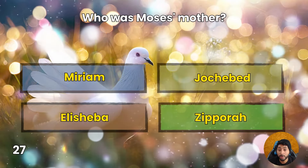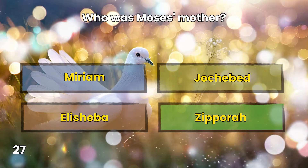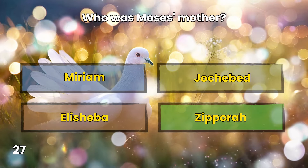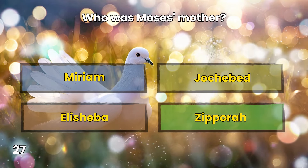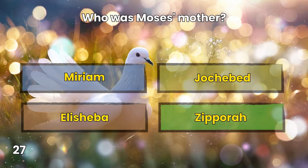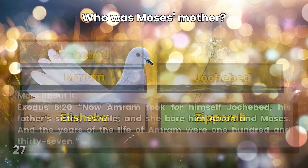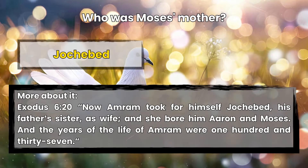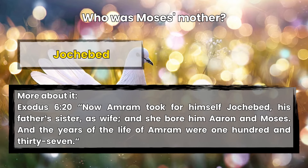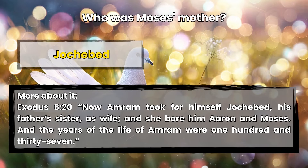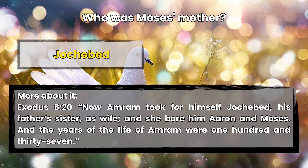Question 27: Who was Moses' mother? Miriam, Jochebed, Elisheba, or Zipporah? Jochebed. Exodus 6:20 — Now Amram took for himself Jochebed, his father's sister, as wife, and she bore him Aaron and Moses, and the years of the life of Amram were 137.